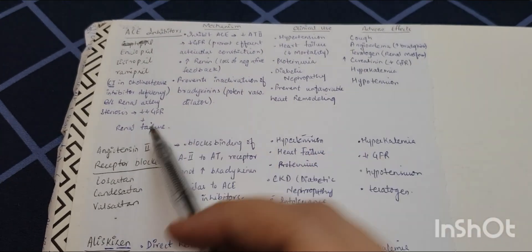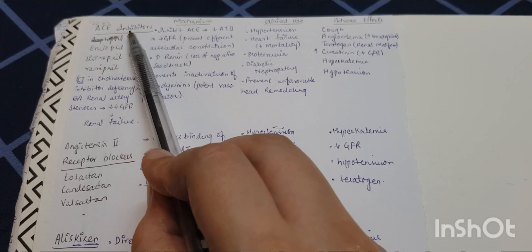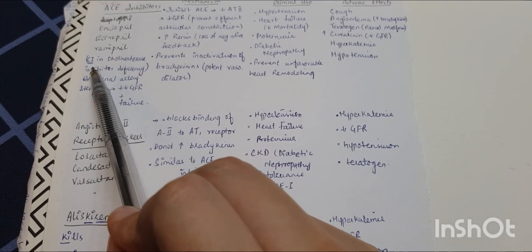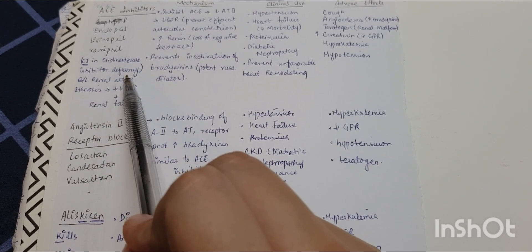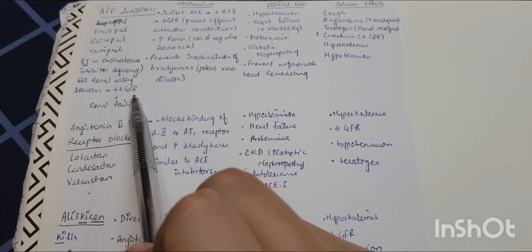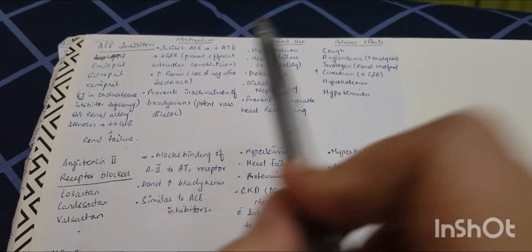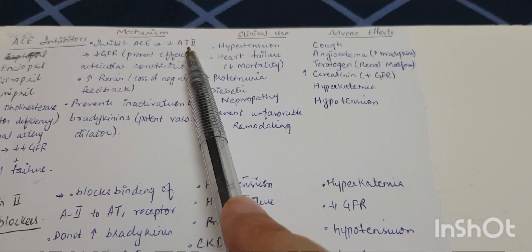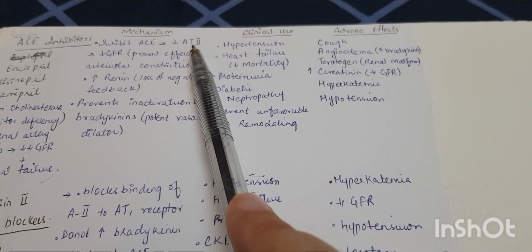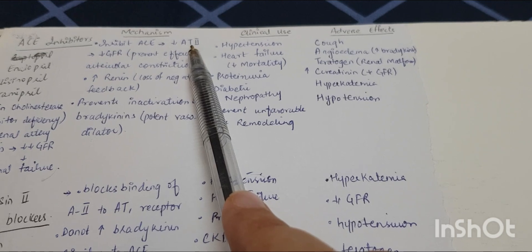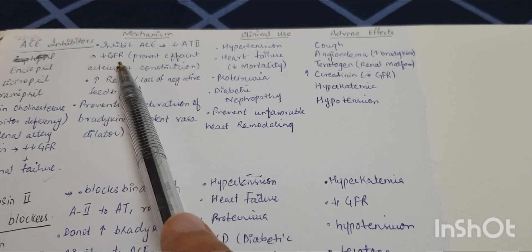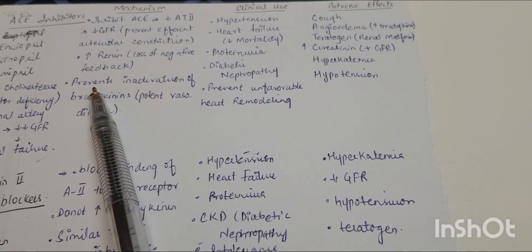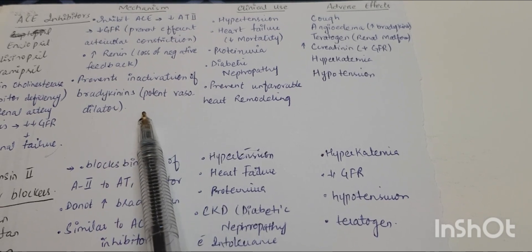ACE inhibitors — angiotensin-converting enzyme inhibitors — include lisinopril, ramipril, etc. They are contraindicated in cholinesterase inhibitor deficiency and renal artery stenosis, as they decrease GFR too much causing renal failure. Their mechanism includes inhibiting ACE so angiotensin 1 cannot convert to angiotensin 2, thereby decreasing GFR, preventing efferent arteriole constriction, increasing renin due to loss of negative feedback, and preventing inactivation of bradykinin — a potent vasodilator.